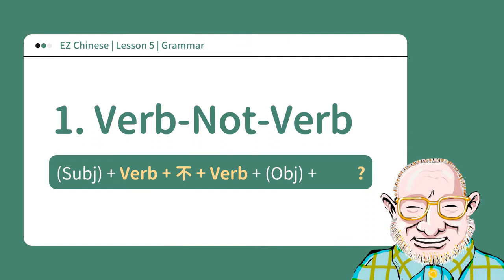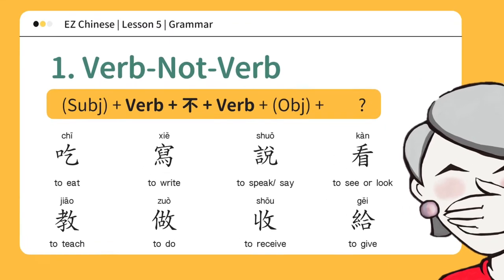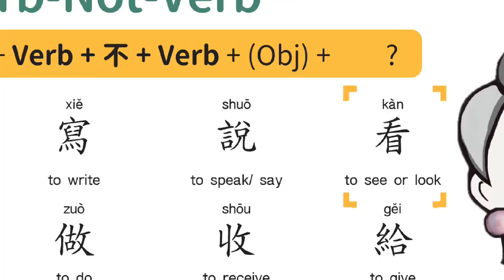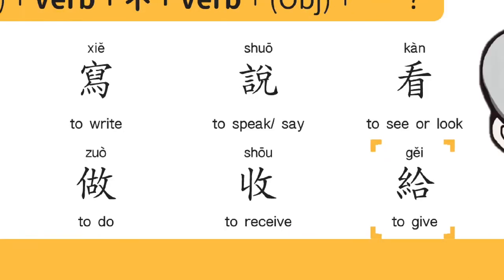Pattern 1: Verb — not verb. Subject plus verb plus 不 plus verb plus object plus question. Let's learn how to use the following eight verbs: 吃 (to eat), 写 (to write), 说 (to speak/say), 看 (to see/look), 教 (to teach), 做 (to do), 收 (to receive), 给 (to give).